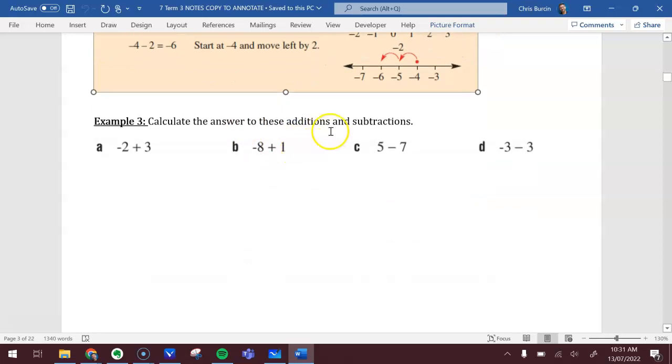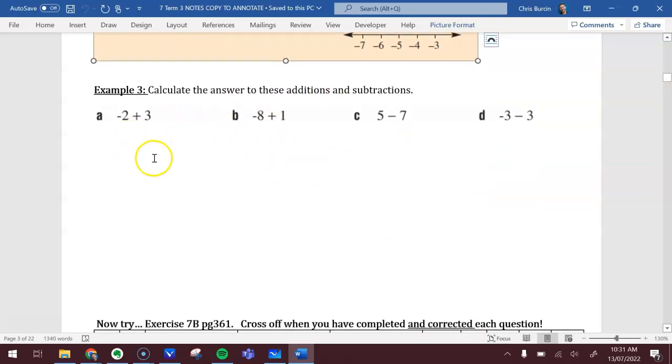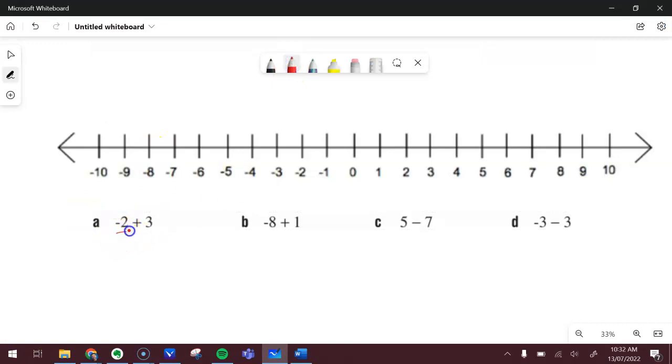So calculate the answer to these with addition and subtraction, and I'm going to use my number line. So for the first one, I've got negative 2, so I'm going to start here at negative 2, and then I'm going to add 3. So that's 1, 2, 3 jumps, and that equals 1. So I started from negative 2 and added 3, and that got me to 1.